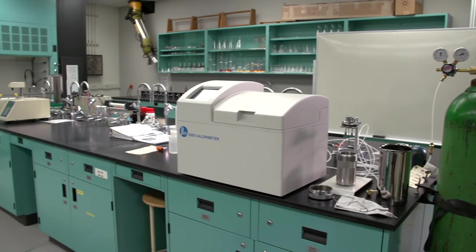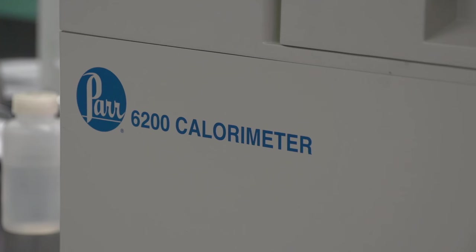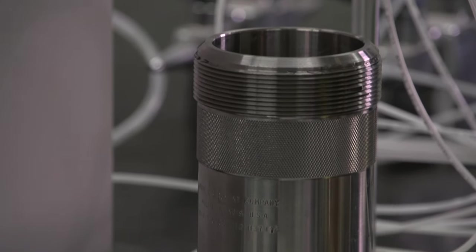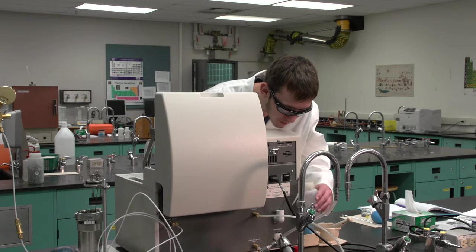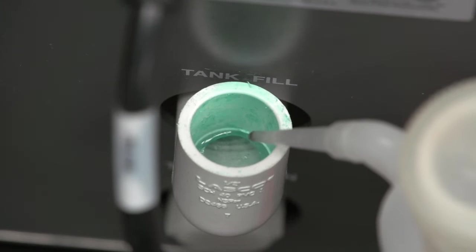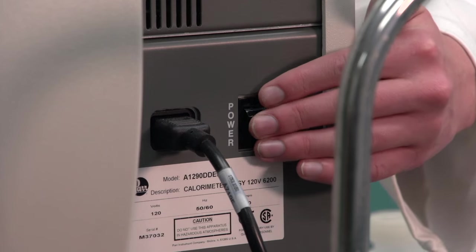The setup for the bomb calorimetry experiment consists of a PAR-6200 isoperibol calorimeter and an oxygen combustion vessel. Verify that the water reservoir at the back of the calorimeter is filled to the line. Turn on the calorimeter.